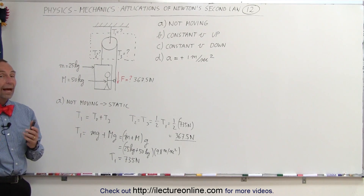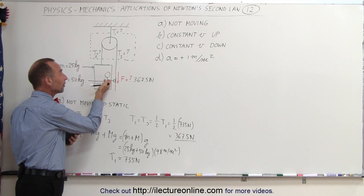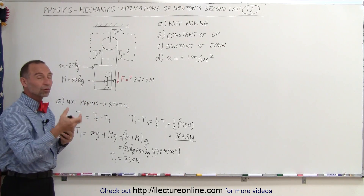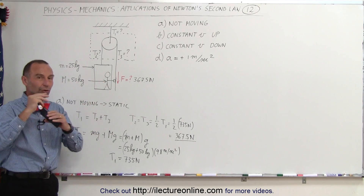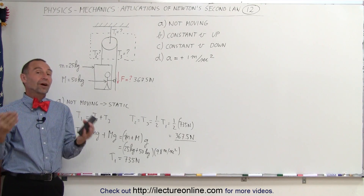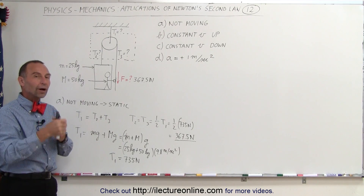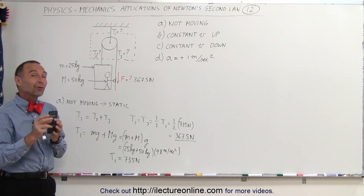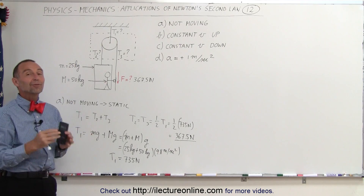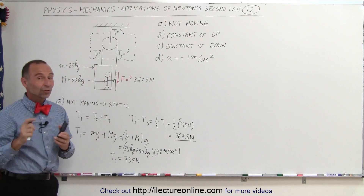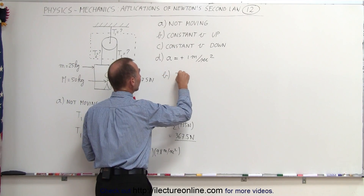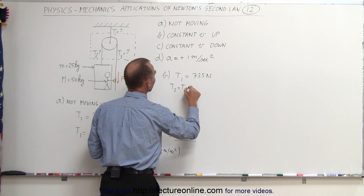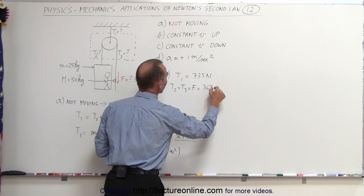For Part B, when the box moves upward at constant velocity: once moving, it takes additional force to get it started, but once we reach the desired velocity, the force required is just enough to maintain constant velocity. Surprisingly, that's the same as the static case. So T1 = 735 newtons, and T2 = T3 = force = 367.5 newtons.